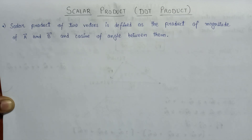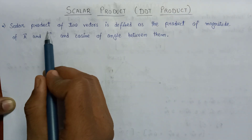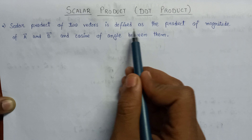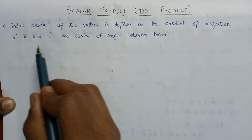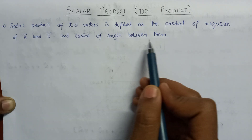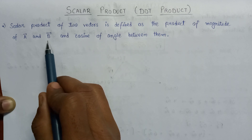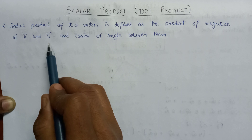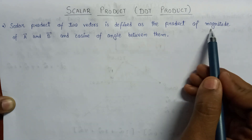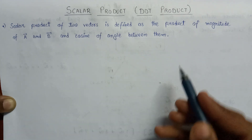Welcome. In this lecture we are going to learn about the scalar product. The scalar product can also be abbreviated as dot product. The scalar product of two vector quantities is defined as the product of the magnitude of vector A and vector B, and also the cosine of the angle between them.